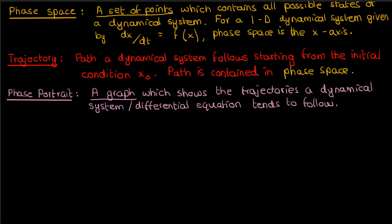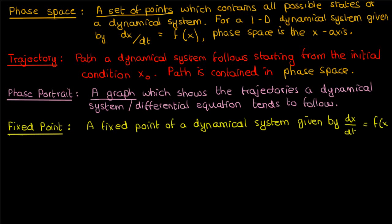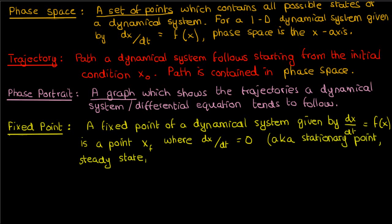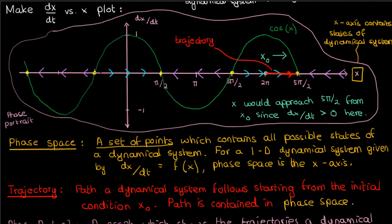There's a few more definitions I'd like to cover before I outline a general procedure on analyzing one-dimensional dynamical systems. These definitions involve the fixed points and their stability. A fixed point of a dynamical system given by dx/dt equals f(x) is a point x_f where dx/dt is zero. Other names for the fixed point include stationary point, steady state, or equilibrium point, and I'm going to be using these names interchangeably so I'd recommend getting used to them.